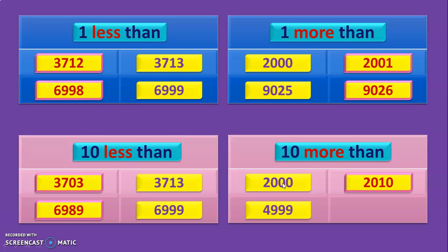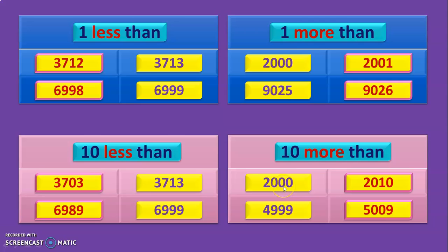Next question is 4,999 — we need 10 more than 4,999. We will look at the 10s place with no change in the 1s place. In the 10s place we have a 9. We add 1 to it — 9 plus 1 becomes 10, so we write 0 and carry over 1. That 1 is added to 9 in the 100s place, giving 10 again — write 0 carry 1 — and 4 plus 1 is 5. So 10 more than 4,999 is 5,009.